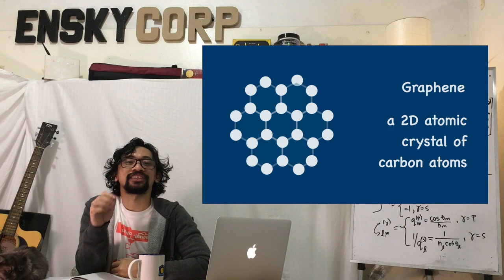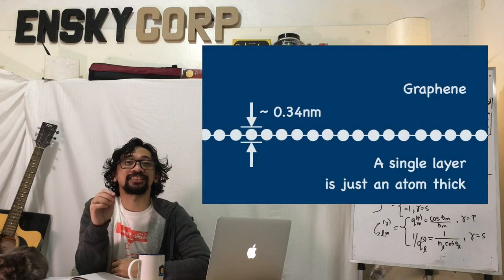A single layer of graphene is just an atom thick. Yes, you heard it right, it's just an atom thick. If you study calculus, you probably come across the term infinitesimal, which means very small—it's almost nothing, but definitely it's something.